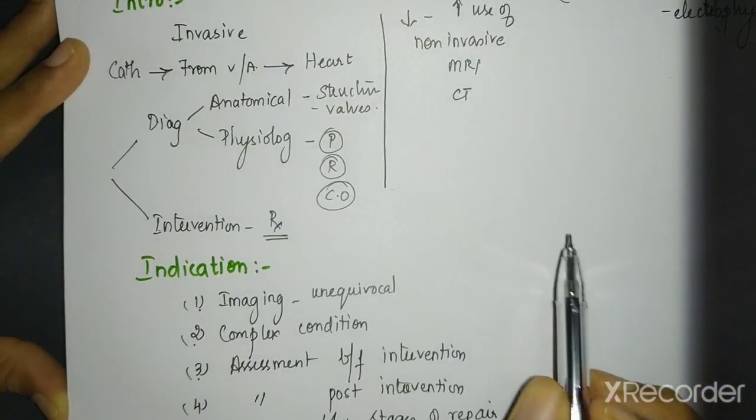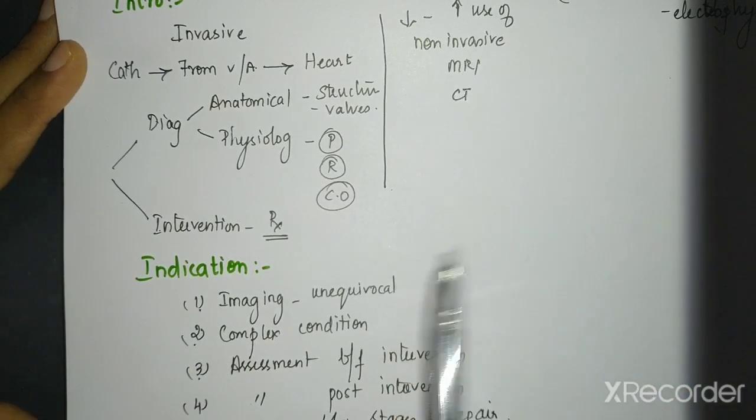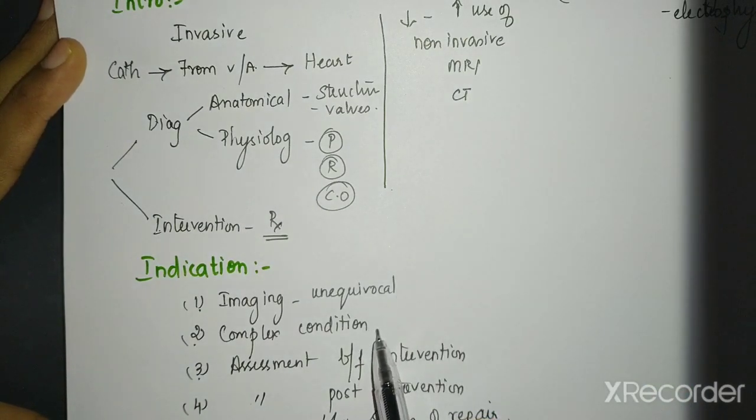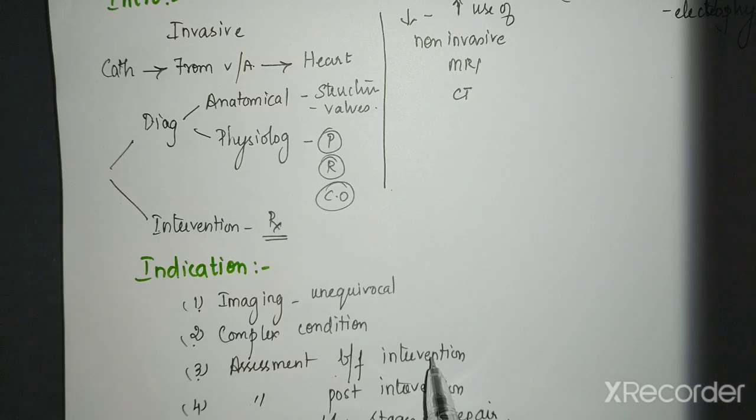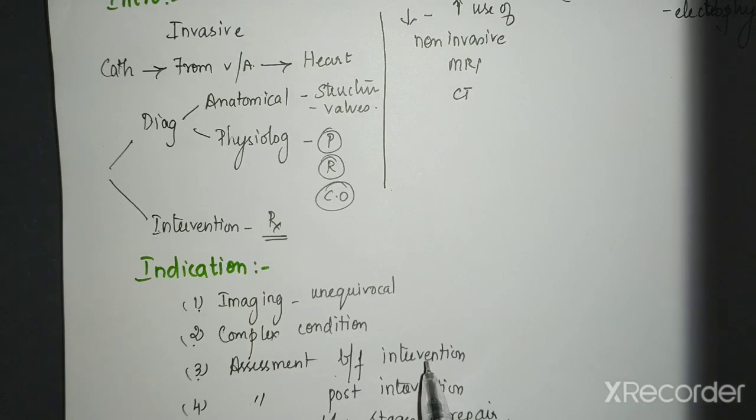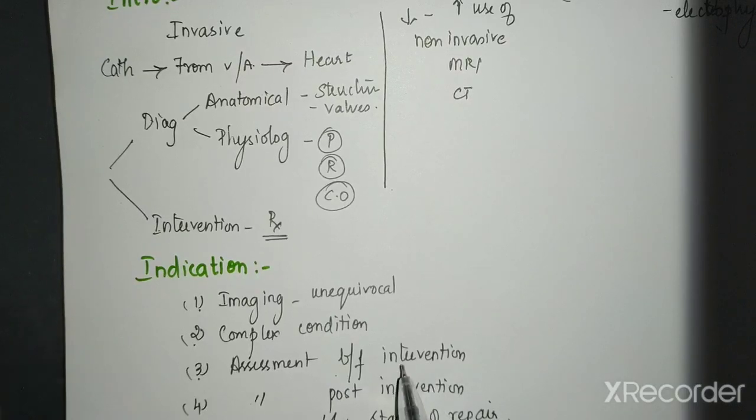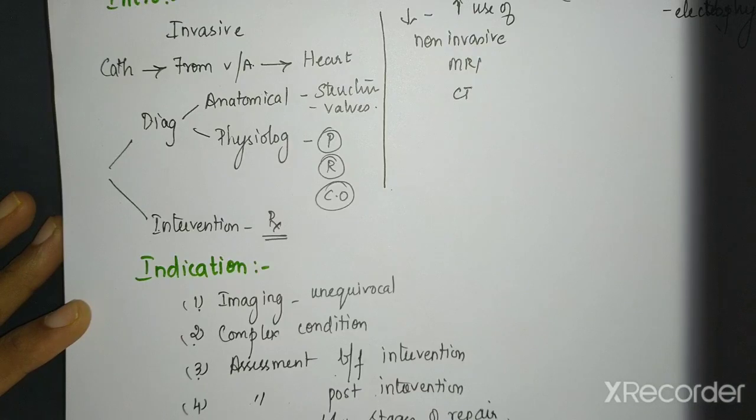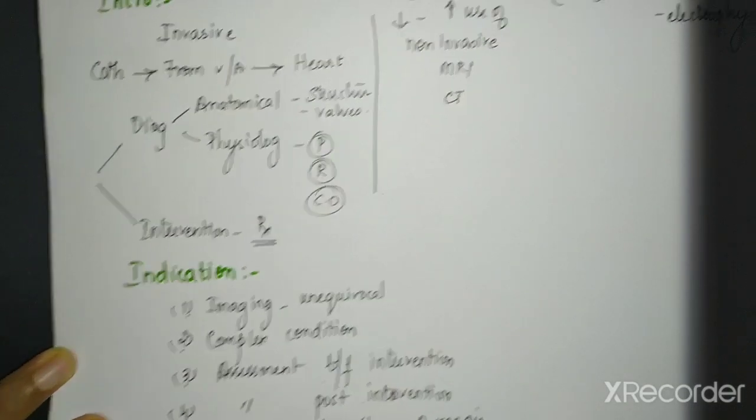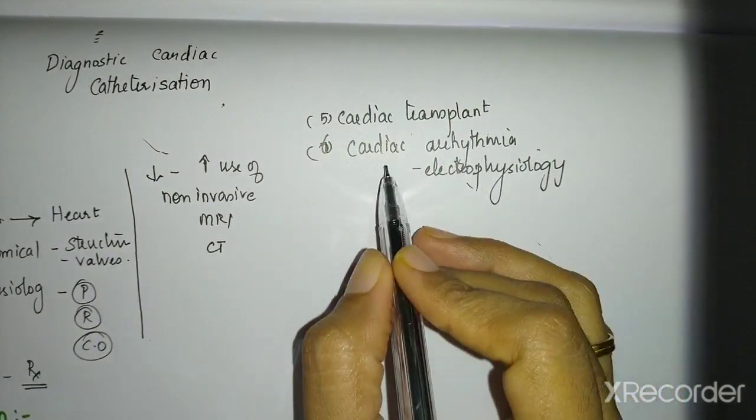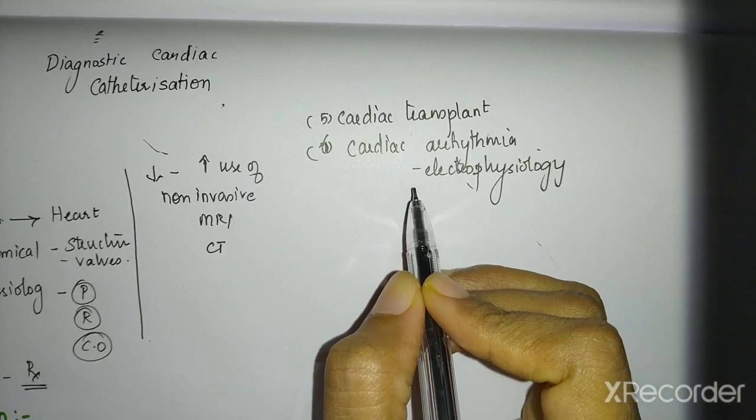So what are the indications? If the non-invasive modalities are not giving a clear picture or the condition is very complex or you want to do an assessment before intervention. Like for example, it can be shunt lesion or it can be like in a pulmonary hypertension case. You need to see whether the child is going to respond to your calcium channel blocker or not. So vaso-reactivity can be assessed. Or post-intervention assessment like between stages of repair of a congenital heart disease or long-term surveillance.